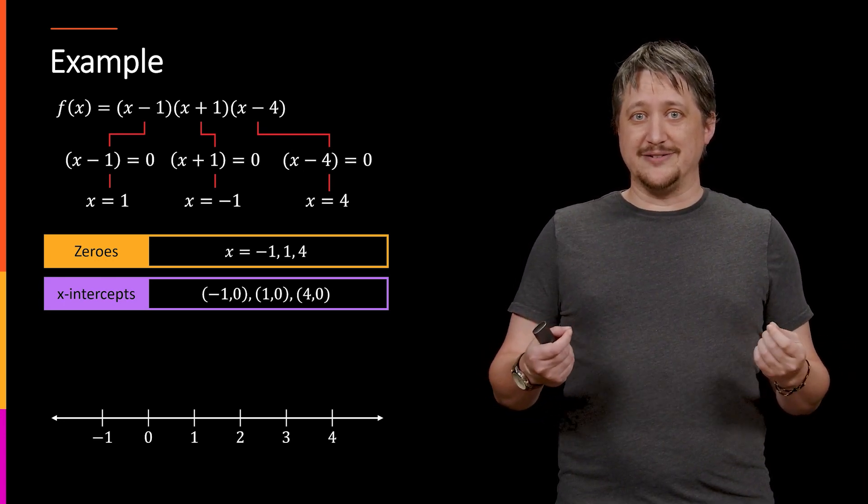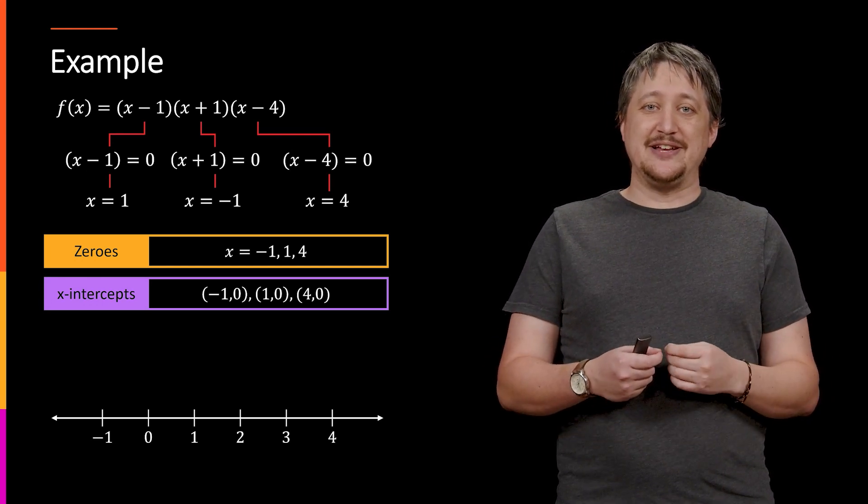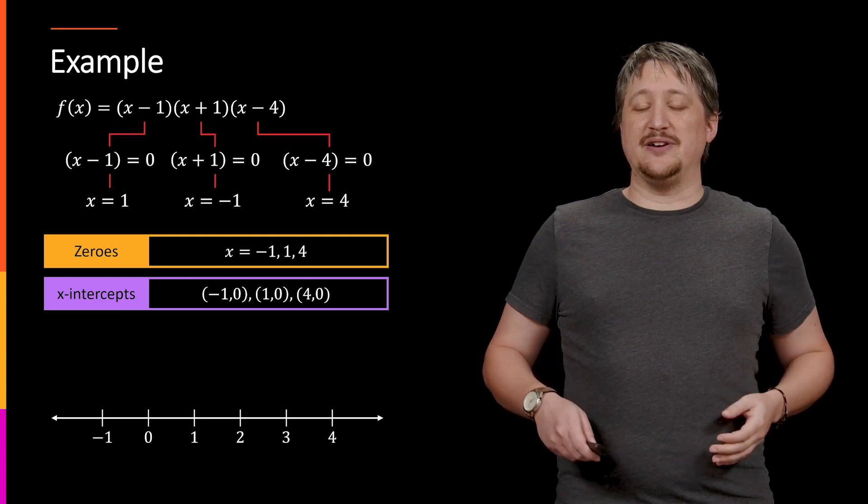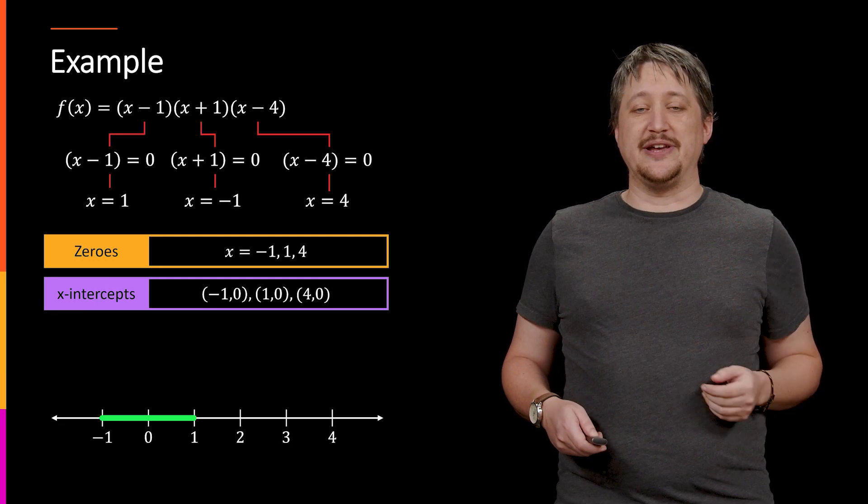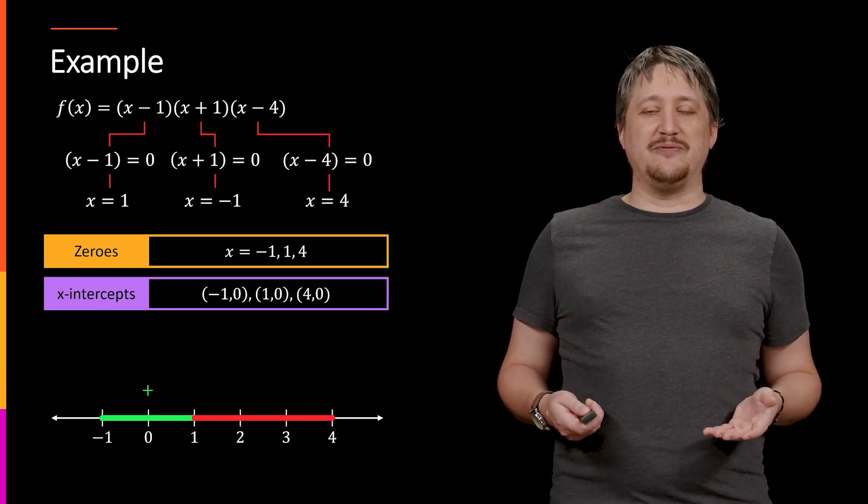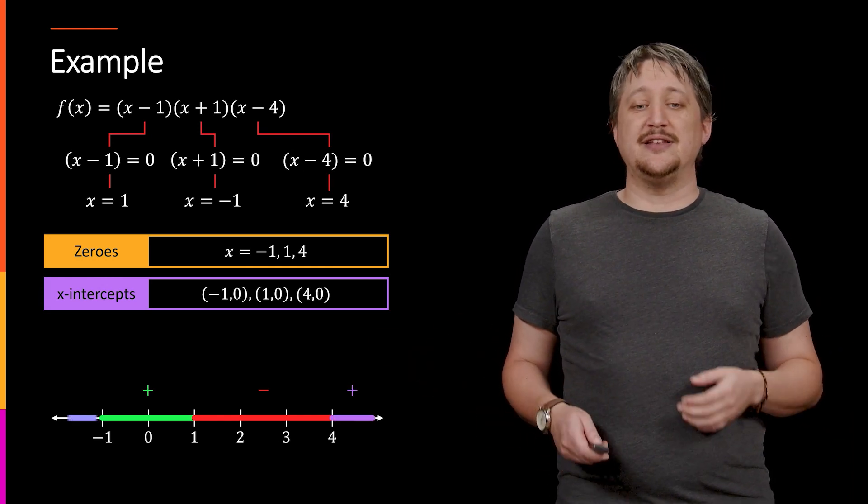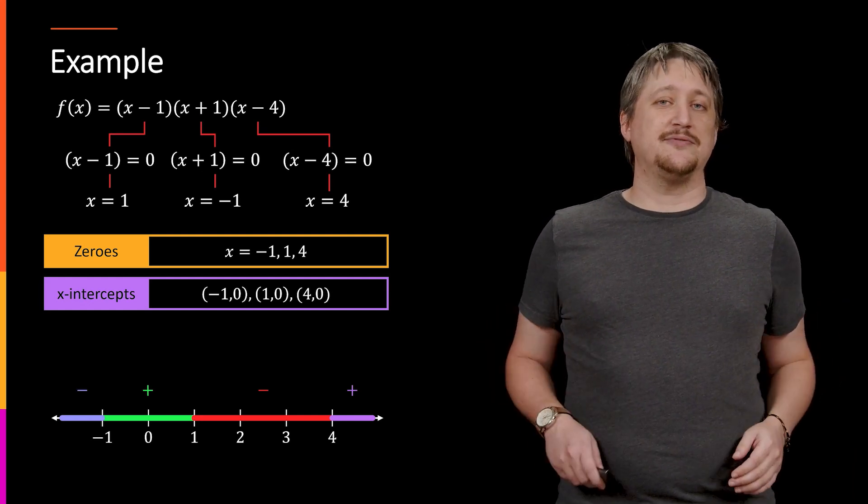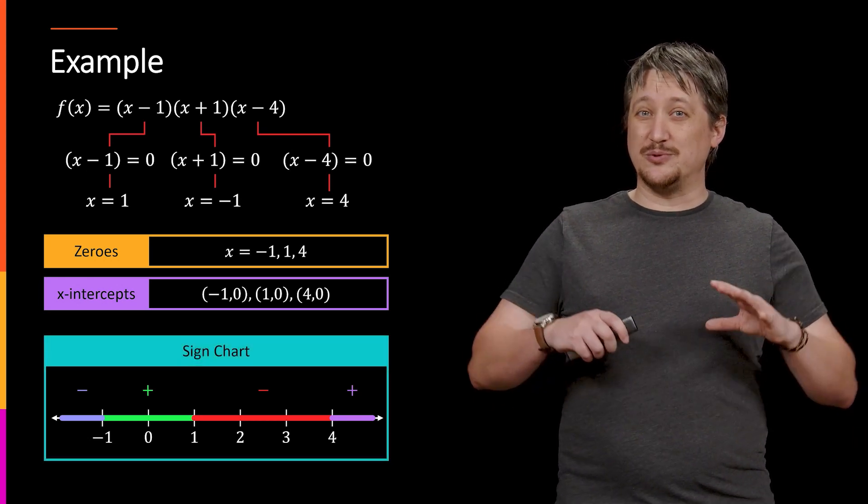Then we can draw a line, really any kind of numbering system, but here we're doing a real line for the x values that we found. We can test intervals of these things and find that between negative one and one we have a certain result, it's positive. Between one and four we have a certain result, it's negative. If we go past four it's positive again. If we go past negative one in the negative direction it's negative.